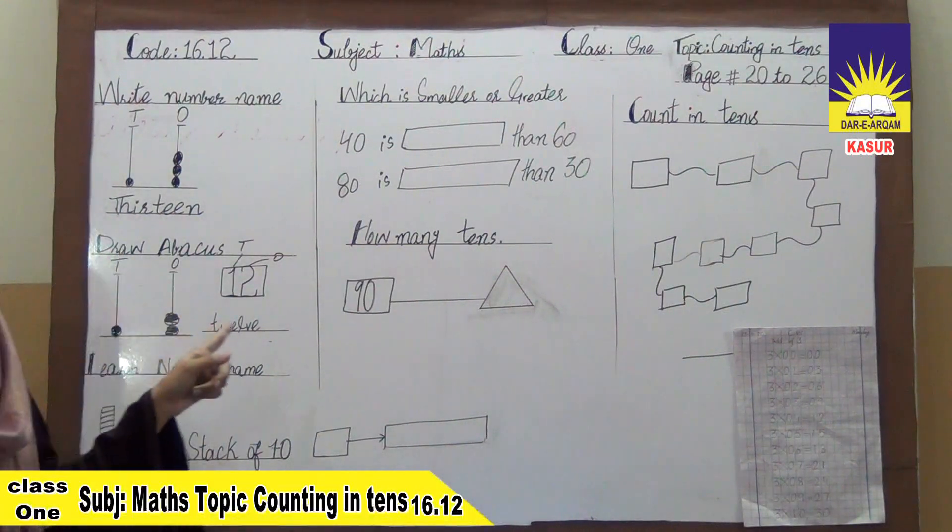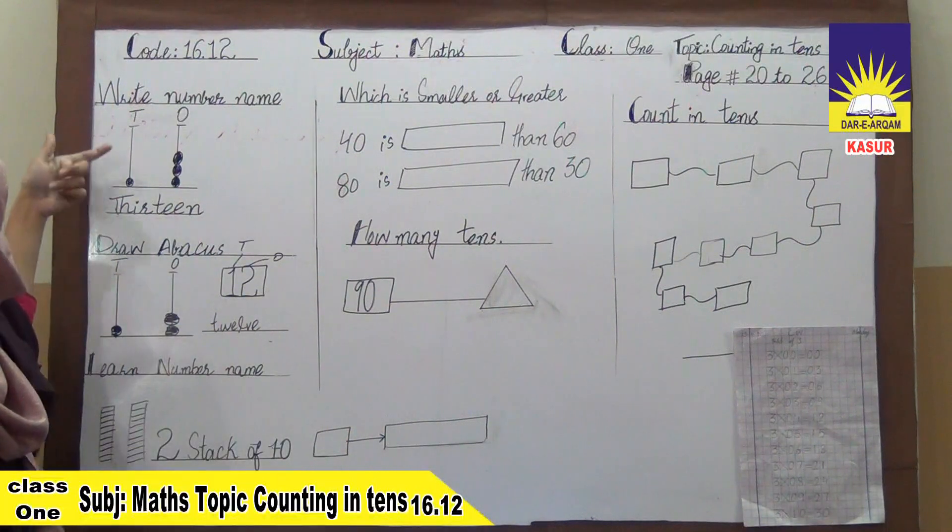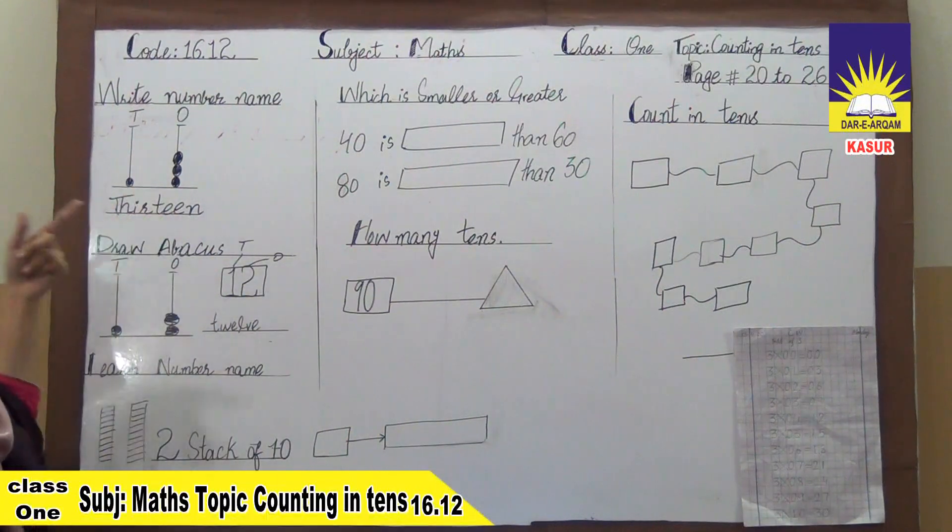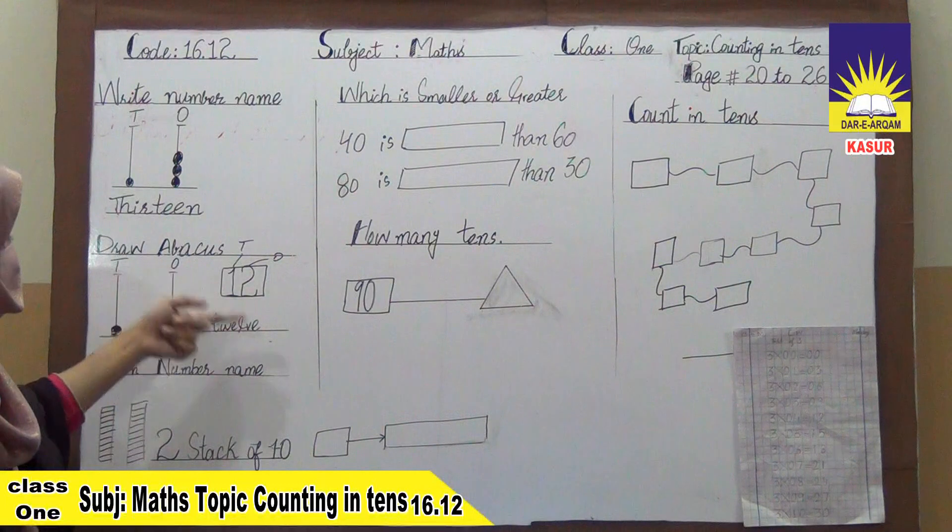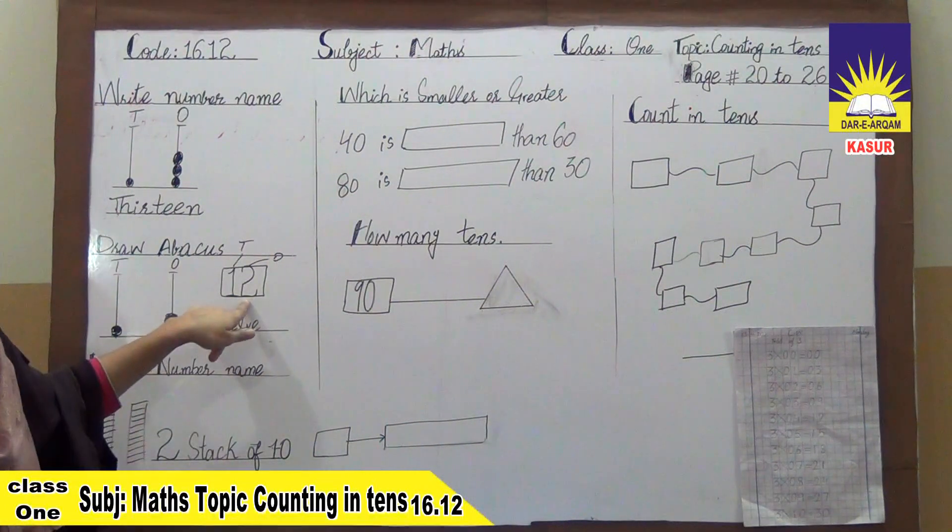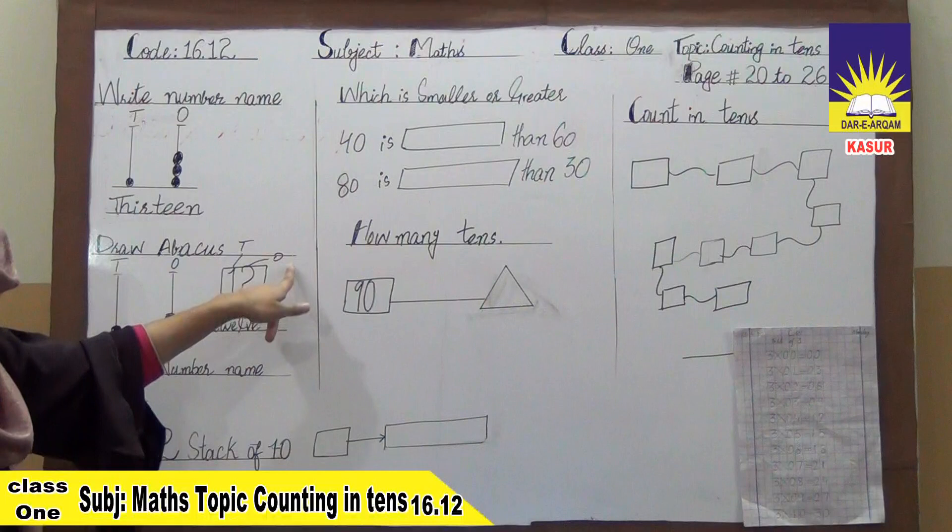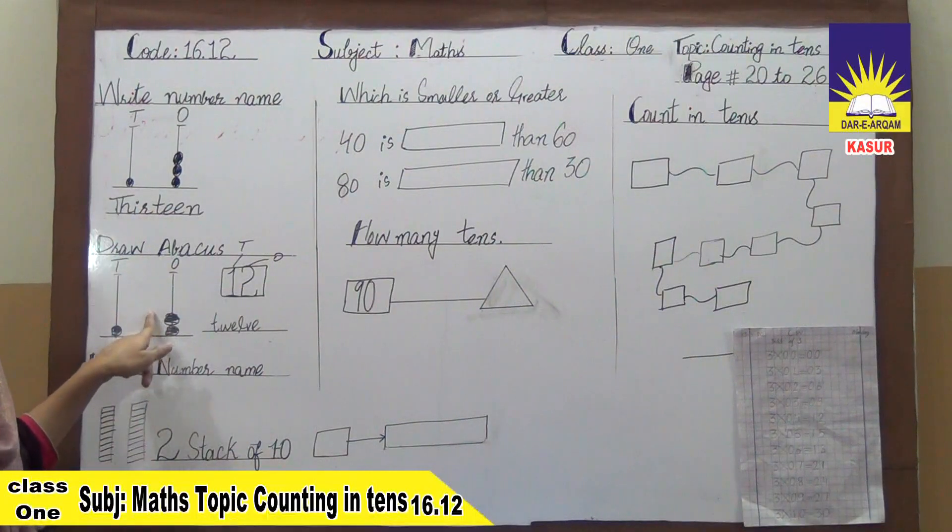These two questions are totally different and opposite. Here we will give a number name. But here we have number name and number. We have 12 in counting words and numbers. We will draw the number name. This is done.